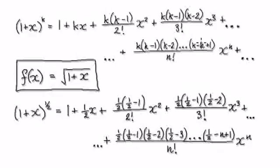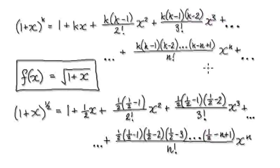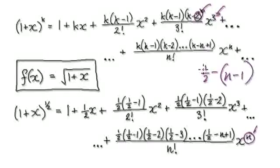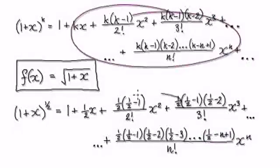For the very last term, it would be k take away one less than n. So for the very last one, it would be k, which is a half here, take away — and so it would be a half, take away, and then take away one less than n. So it would be a half minus n, minus n, and then minus, so that would be a plus one. The last one would be this thing here.